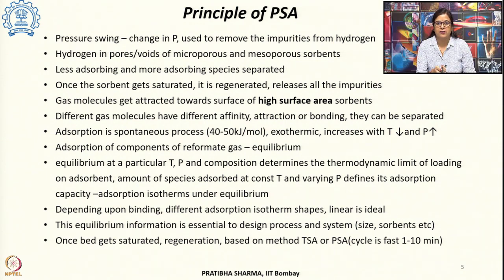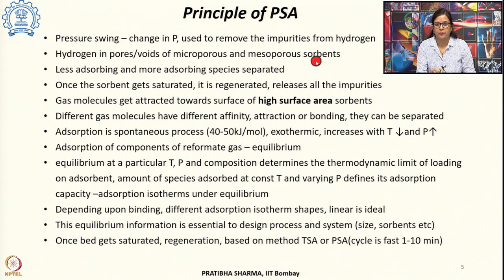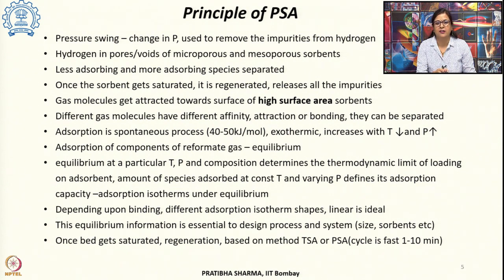There are different sorbents used in the process — these can be microporous or mesoporous. When the feed gas is allowed to pass through the adsorbents, the impurities or contaminants get adsorbed onto the sorbent. However, hydrogen remains in the pores or voids, unadsorbed. This is a separation process where a species which adsorbs gets separated from one which is either less adsorbed or not adsorbing.